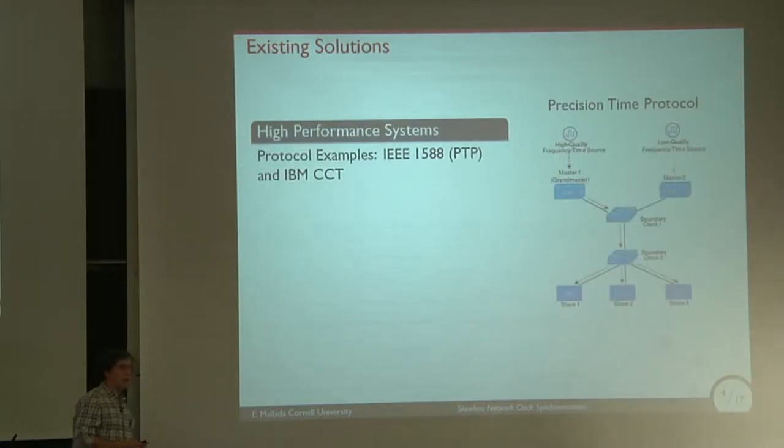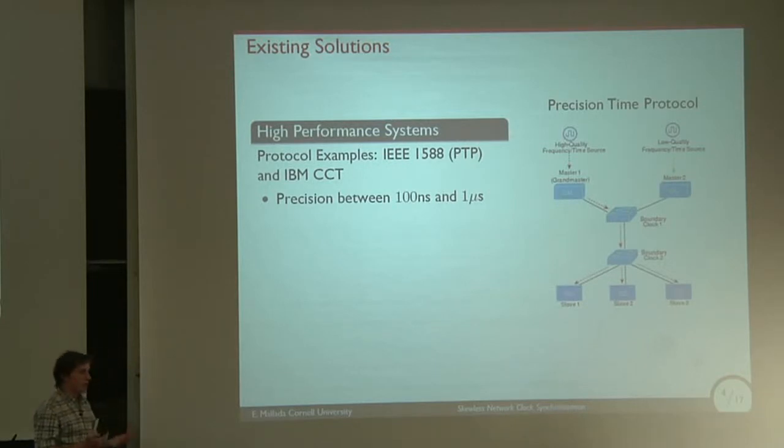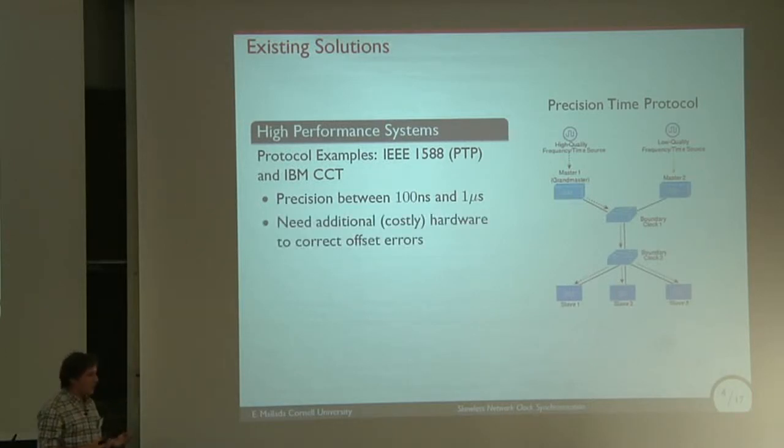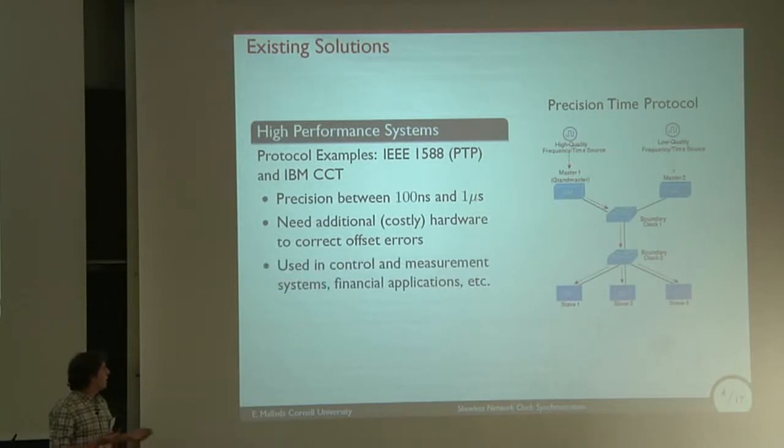If you're interested in high-performance systems, there are other types of protocols, like Precision Time Protocol or even IBM Coordinated Cluster Time. The precision here is much higher, you can get up to a few hundred nanoseconds or a few microseconds. However, you need to add additional hardware to the network in order to correct these network latencies, or at least keep track of them so that you can correct the offset measurements that you do between the different nodes.